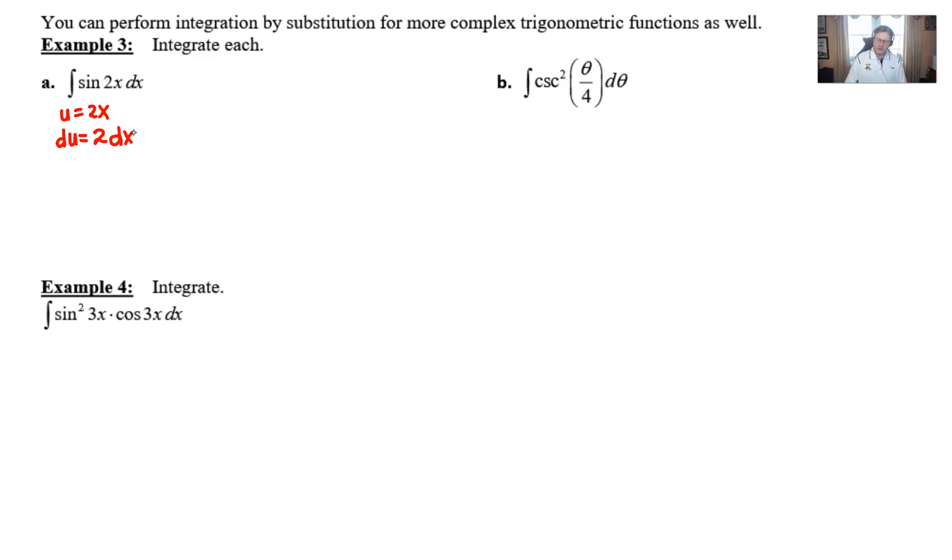At this point we notice that our du and our dx aren't interchangeable. They're not equal to each other outright. They have this factor of 2 that is getting in the way. So as we did before, you could solve for dx.